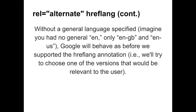What will happen in search results if you don't specify a general language such as EN, and only include EN-GB and EN-US? What do English-speaking users outside those regions, say in Canada or Australia, see in their search results? Or what happens if you choose not to specify rel alternate hreflang at all? In all of these cases, we'll still do our best to find the most relevant version of the page for the searcher, similar to our behavior before supporting rel alternate hreflang in 2011.